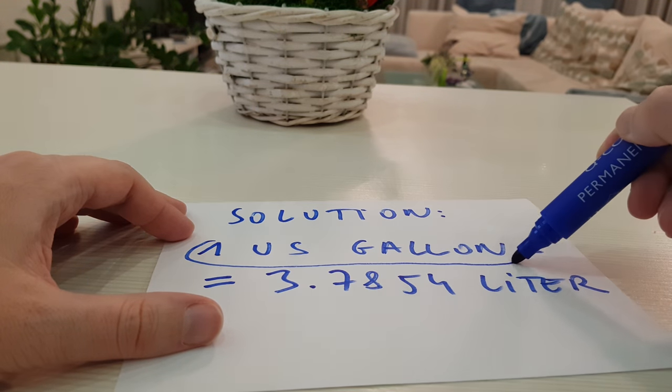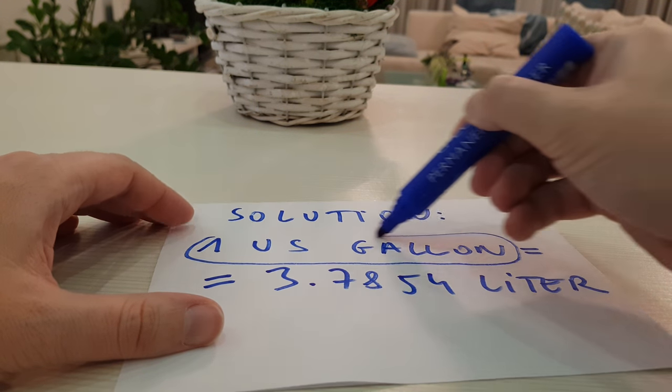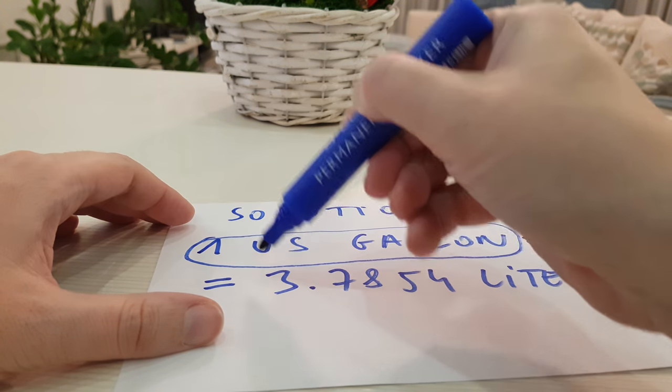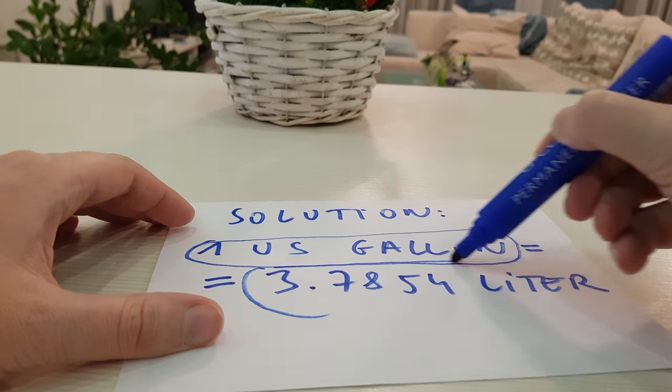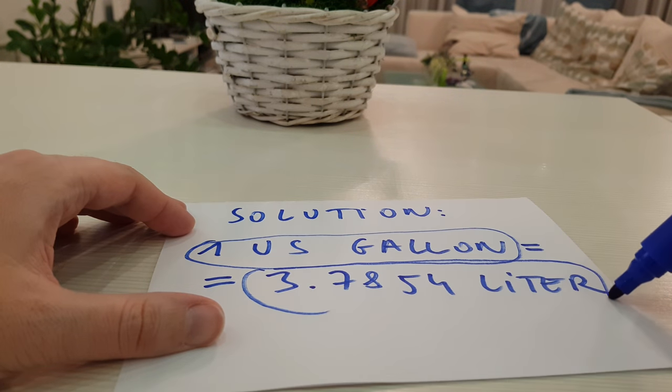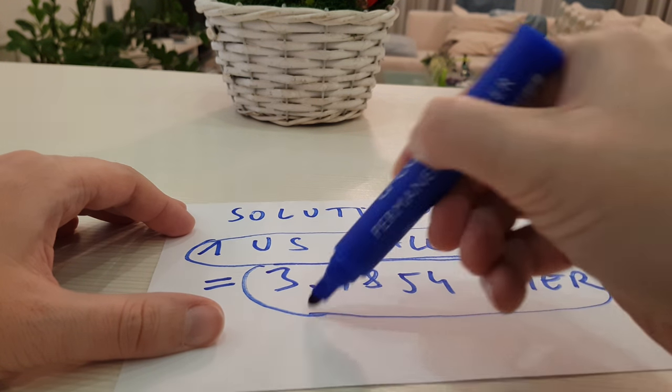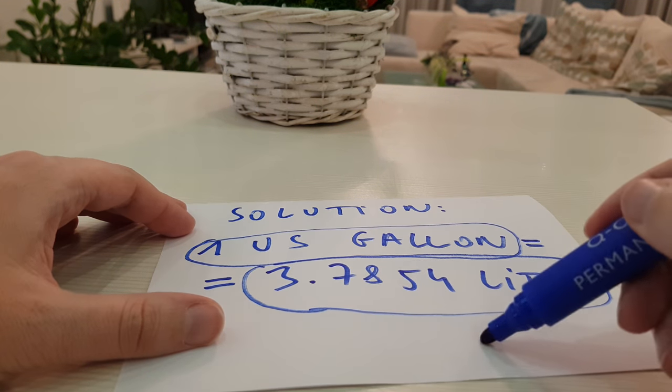Here is the solution again. One U.S. Gallon equals 3.6854 liters.